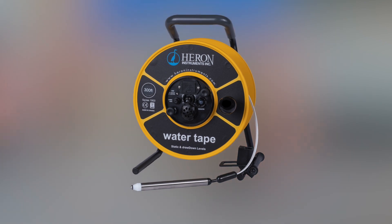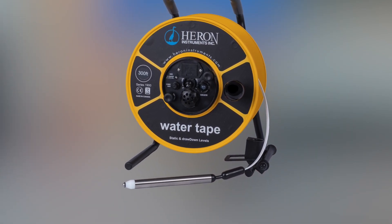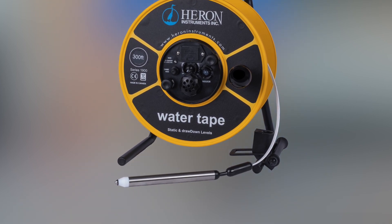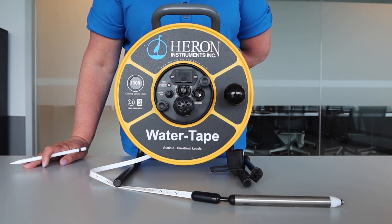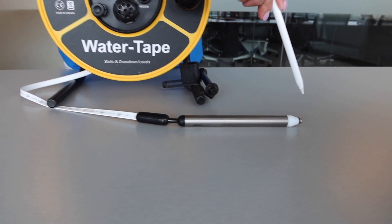The water tape comes with a fully submersible, permanently affixed, modular water level probe. This probe is used to detect both static and drawdown levels. When you lower the probe into the well, the unit will start to sound immediately when it comes into contact with water.